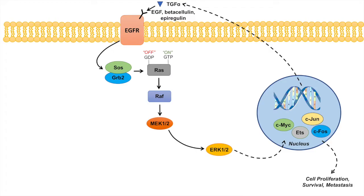When RAS is activated, it leads to RAF and MEK activation, which then leads to ERK activation, which then leads to proteins such as C-MYC, C-JUN, and C-FOS — all of which have roles in cell proliferation, survival, and metastasis. So if this pathway is hyperactivated, we can see why it can lead to cancer pathogenesis because of the increases in cell proliferation, survival, and metastasis.